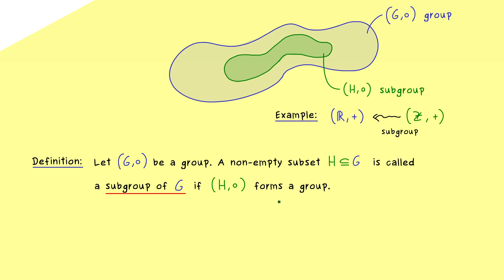This means restricted to the subset, the binary operation has to be well defined. But then we don't have to check all group properties from scratch. For example, associativity holds on H because it already holds on G. We still have to check that H contains an identity element and all inverses — and that is all we need to confirm H is a subgroup.